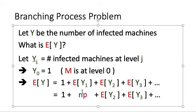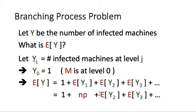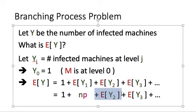Intuitively, there are NP machines infected at level 1, so it seems like there would be NP times NP machines infected at level 2, since each machine further infects roughly NP machines. Unfortunately, NP may not be an integer, and it is not rigorous to talk about how 0.3 machines can infect other machines. So we need a more rigorous way to find E[Y_2], E[Y_3], and so on.